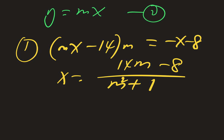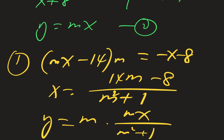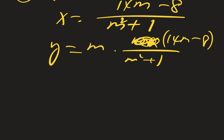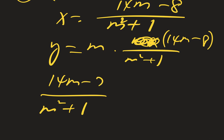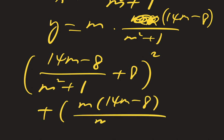So y = m times x, where x = (14m - 8)/(m² + 1). Then y = m(14m - 8)/(m² + 1). Now substitute into the circle equation: (14m - 8)/(m² + 1) + 8 all squared, plus m(14m - 8)/(m² + 1) - 14 all squared, equals 52.